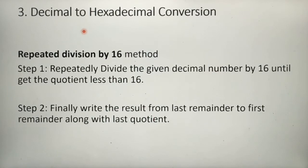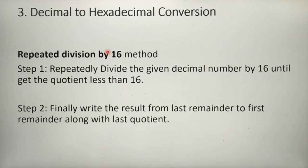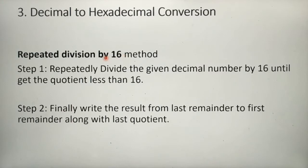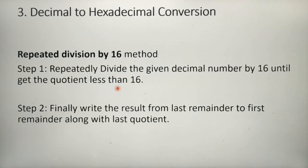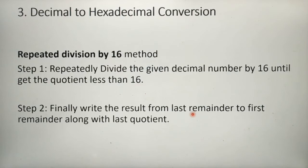Next, let's see how to convert a decimal number to a hexadecimal number. We divide the given decimal number by 16. Why? Because hexadecimal means 16 numbers — digits 0 to 9 along with alphabets A to F — so 16 total. The same two-step process applies: repeatedly divide by 16 until the quotient is less than 16, then write the result from last remainder to first remainder along with the last quotient value.